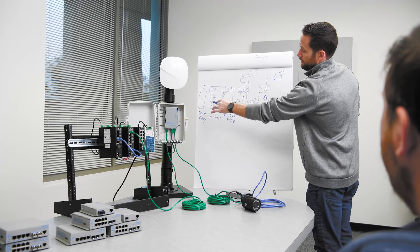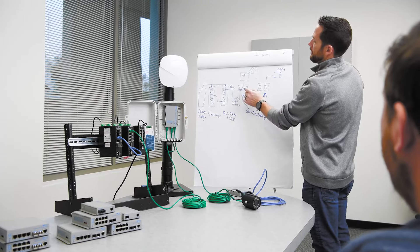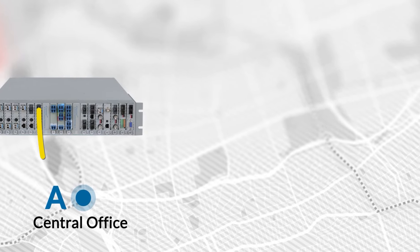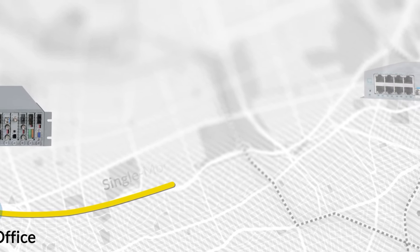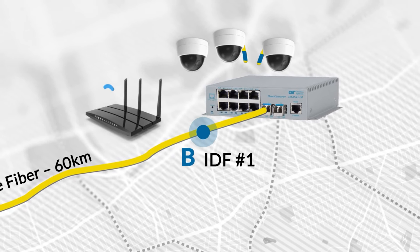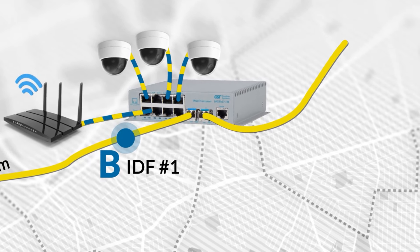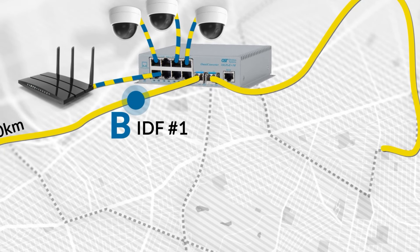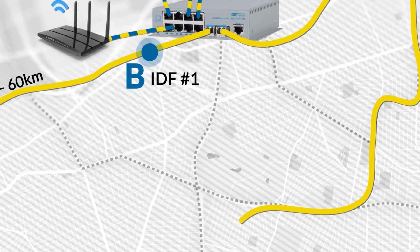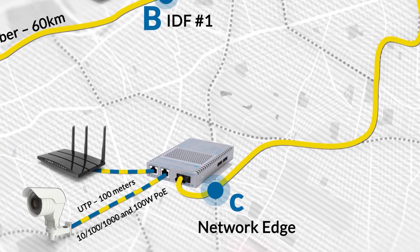Our highly trained network design team will review your existing network and provide expert recommendations to support your operational and budgetary goals. Some of the free services our customers love are network diagrams illustrating your network and where Omnitron products will be installed along with the associated part numbers, power calculations and verification that there will be enough PoE power depending on your network variables, and validation of your network design specifying the optimal device for your application.